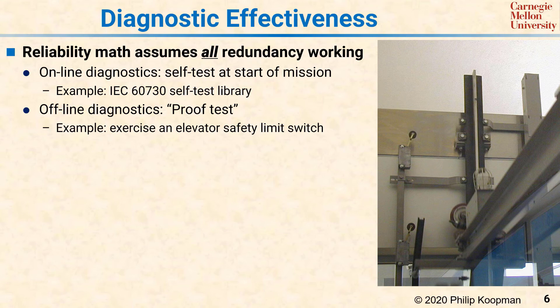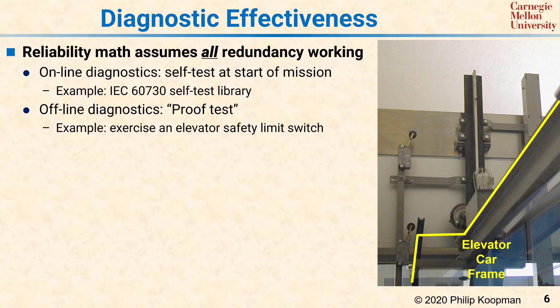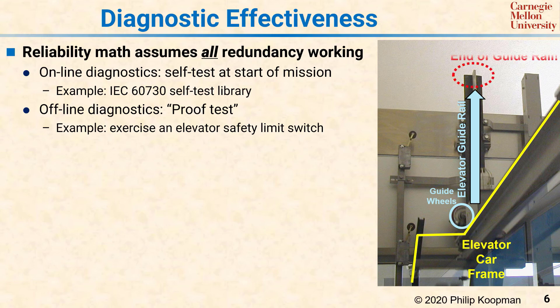Let's use an elevator safety limit switch as an example. If you've been to a shopping mall or airport with an open-air glass-enclosed elevator, you might have looked into the enclosure and seen something like this. The bottom right of the picture shows the top of the elevator car frame. The elevator has a guide rail that keeps it from jiggling around in the hoist way, with guide wheels to follow that rail as the elevator moves up. At some point the guide rail has to end, and it would be very bad if the elevator just popped off the end of that guide rail.